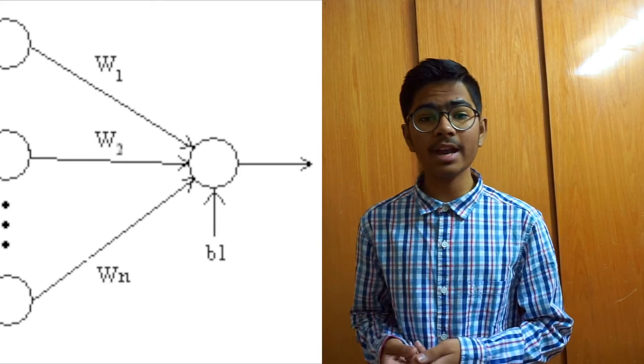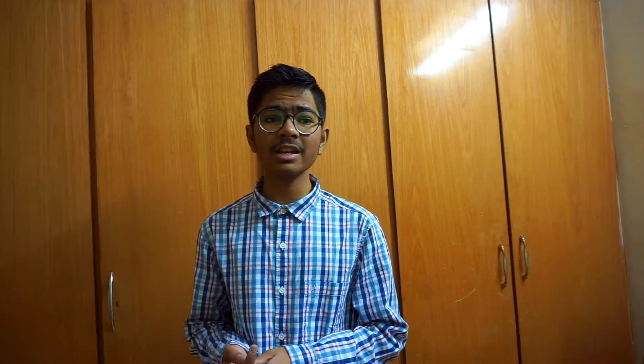The first neural network was created by Frank Rosenblatt — he called it the perceptron, and it was a two-layered network. After a decade, nobody really talked about perceptrons, because other machine learning models, like SVM, were much better.